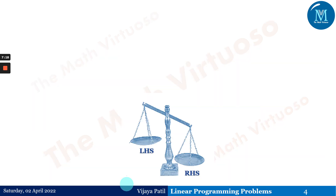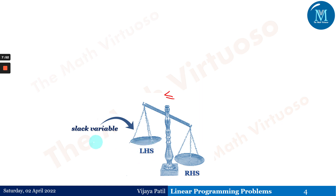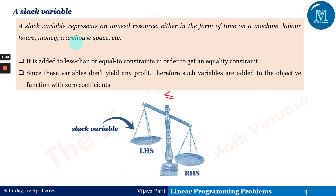When constraints are of the less-than-or-equal-to type, we must convert them to equalities. Since the left-hand side is less than the right-hand side, we add a variable to the LHS to bring both sides to the same level. This added variable is called a slack variable. A slack variable represents an unused resource — such as time on a machine, labor hours, money, or warehouse space. It is added to less-than-or-equal-to constraints to obtain an equality. Since slack variables don't yield any profit, they are added to the objective function with a zero coefficient.